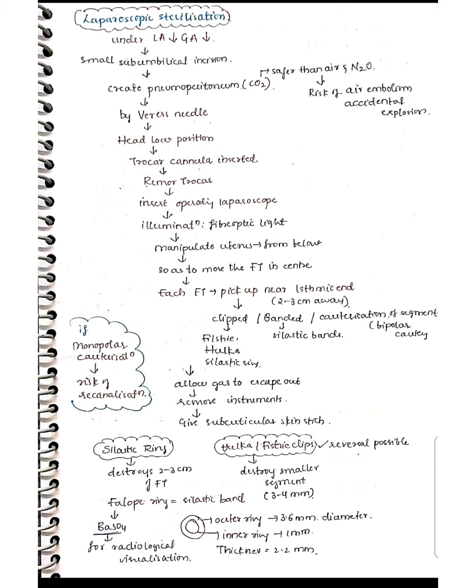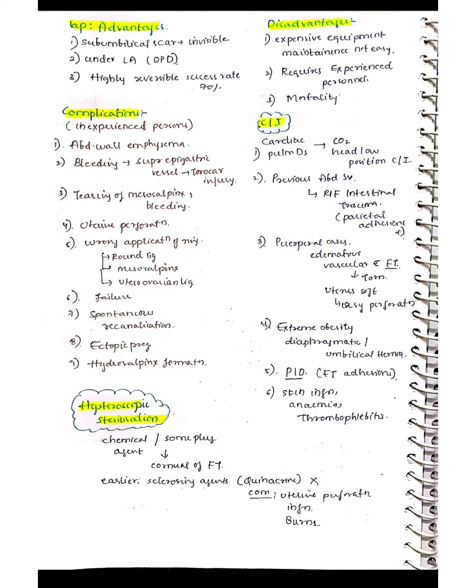The elastic ring, also called the Fallop ring, destroys two to three centimeters of the fallopian tube. It has an outer ring of 3.6 mm diameter, an inner ring of 1 mm diameter, and a thickness of 2.2 mm. It is impregnated with barium sulfate for radiological visualization. Hulka and Filshie clips destroy a smaller segment of 3 to 4 mm, making them potentially reversible, unlike the elastic ring.